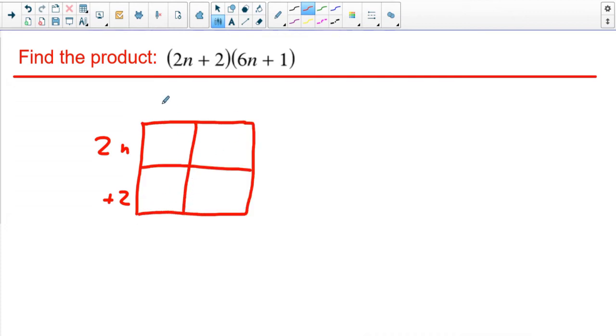And on the top, I'm going to put 6N plus 1. So we're going to go ahead and multiply these. 2N times 6N, that's going to be 12N squared. 2N times 1 is just 2N. 2 times 6N is 12N. And then 2 times 1 is just 2. So this one, you can see, we are going to have some like terms here to combine, right?